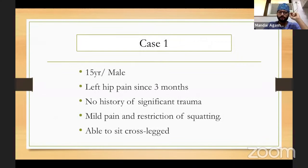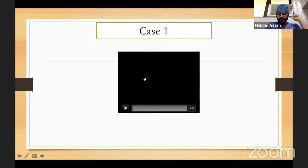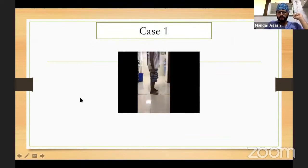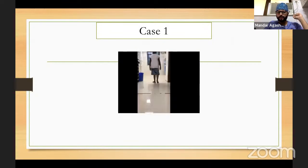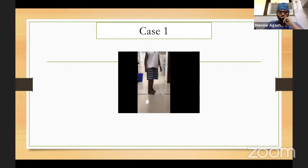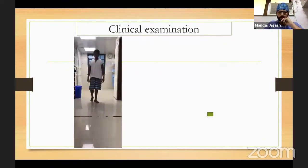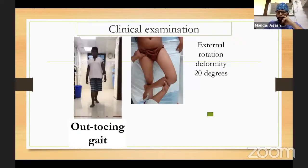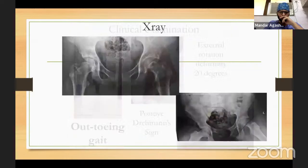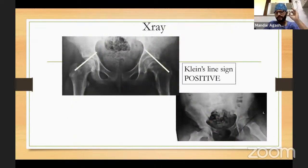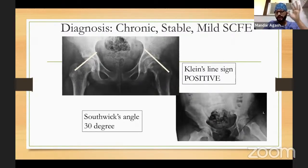Case 1: a 15-year-old male with hip pain for three months. He has mild pain with restricted squatting but is able to sit cross-legged. On examination, there is mild out-toeing of the left side with very minimal lurch, an external rotation deformity of 20 degrees, and a positive Drehmann sign. On X-ray, the Klein's line is positive and the Southwick angle is less than 30 degrees. This is a chronic, stable, mild slip.